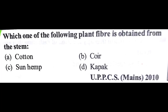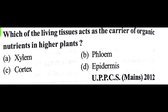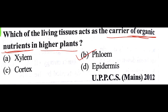Which one of the following plant fibers is obtained from the stem? The answer is C: sun hemp, because cotton is obtained from the flower. Which of the following tissues acts as the carrier of organic nutrients in higher plants? The answer is B: phloem. Xylem carries water and phloem carries food or nutrients.